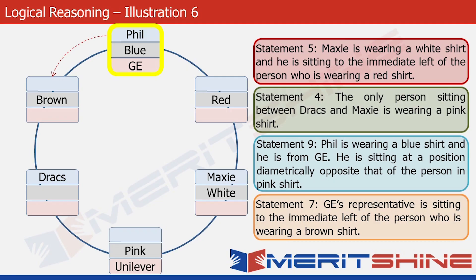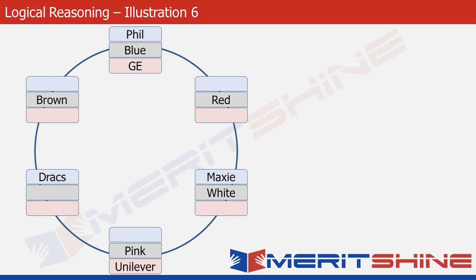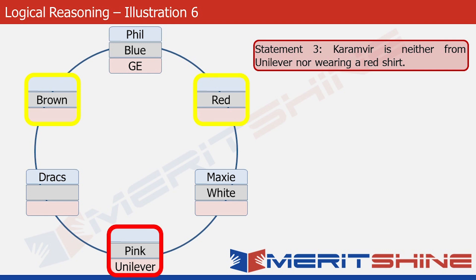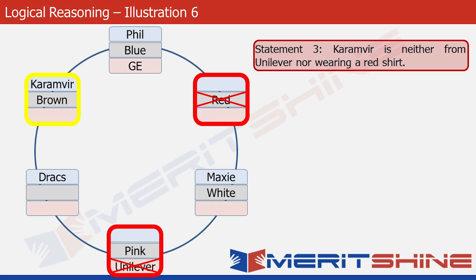Let's look at statement three. It states that Karamveer is neither from Unilever nor wearing a red shirt. There are three places in the structure where Karamveer can be placed, highlighted in yellow. The Unilever position is ruled out, and the red shirt position is also ruled out. So Karamveer has to be placed in the third box.